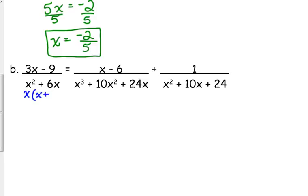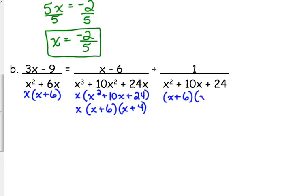Factor them and see what they share in common. So the first one has a GCF of x, so take out an x, so you get x times x plus 6. Start by taking out a GCF of x out of that second one. You get x squared plus 10x plus 24, and then that trinomial will factor, x plus 6 times x plus 4, because 6 times 4 is 24, 6 plus 4 is 10. And then that's exactly what that last denominator is as well, x plus 6 times x plus 4. So our LCD really isn't that complicated at all. It's just that middle denominator, x times x plus 6 times x plus 4.